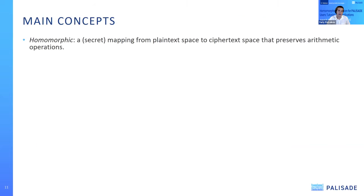Now moving to main concepts. The word 'homomorphic' means a certain mapping from plaintext space — data in the clear — to ciphertext space that preserves arithmetic operations. The same operations that you can perform on plaintext can be performed on ciphertext. All five schemes in Palisade are based on either Learning With Errors (LWE) or Ring Learning With Errors (RLWE), a post-quantum assumption related to linear systems of equations with noise.